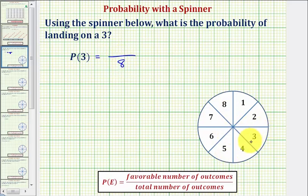And notice only one section is a three. So there is only one favorable outcome, which would be landing in this region here. Which means the probability of landing on a three is one eighth.